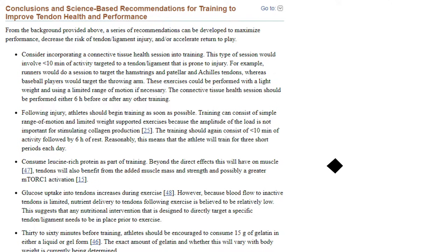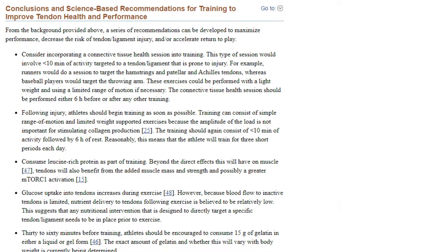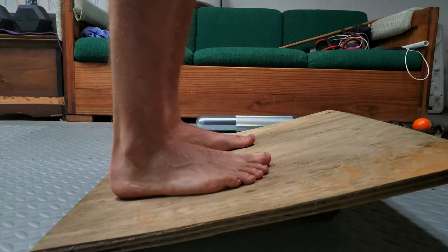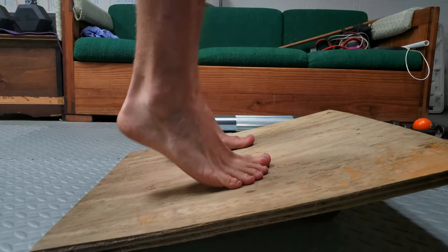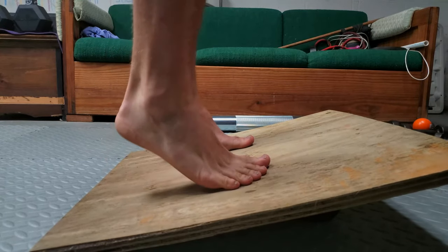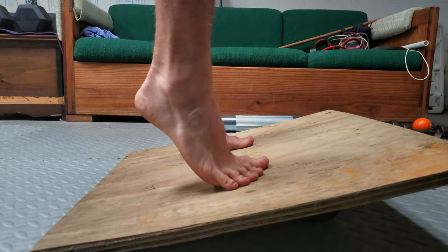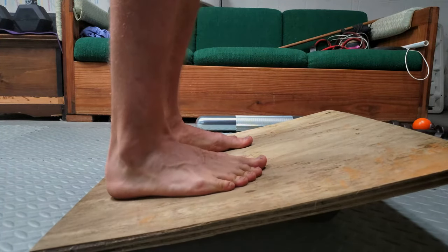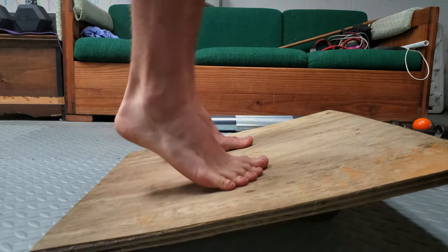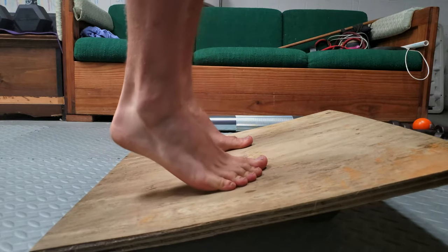Bullet points three and four will be discussed in later research articles, but they really set the tone for how important nutrition being in place before starting your training session really is. If I were rehabbing my Achilles tendon, a good parameter might be to keep exercises to under 10 minutes in length and consume collagen-rich foods beforehand.